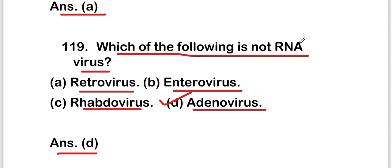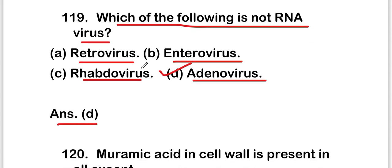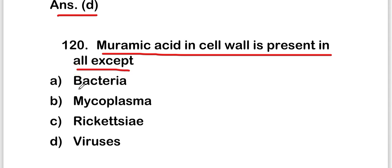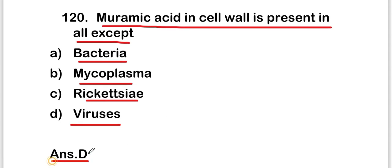The last question is: muramic acid in cell walls is present in all except — bacteria, mycoplasma, rickettsia, or viruses? The right answer is option D, viruses. Muramic acid in cell walls is present in all except viruses. These are all 20 questions of this video. Thank you for watching.